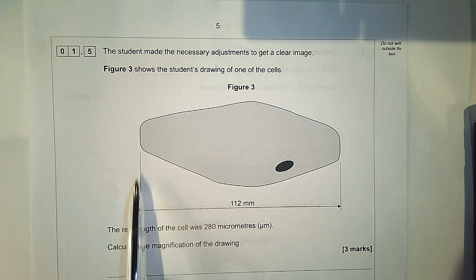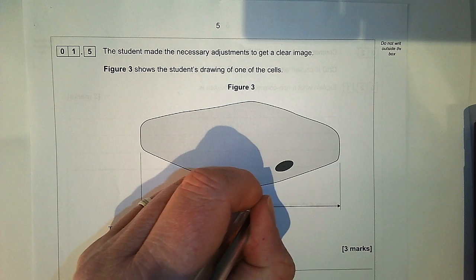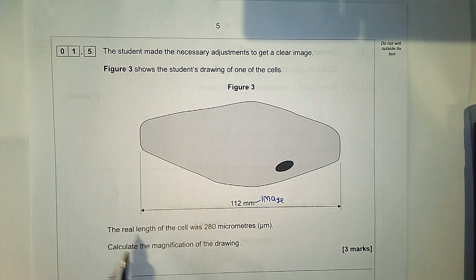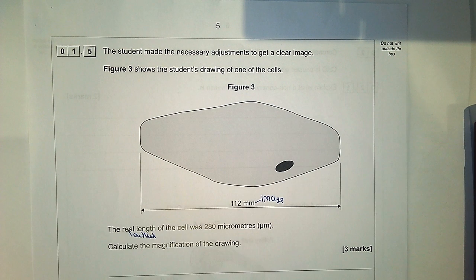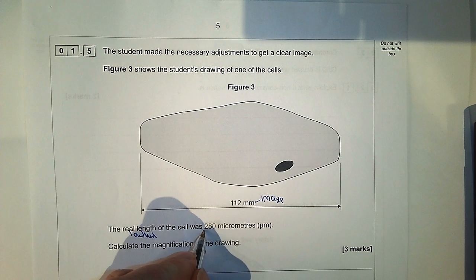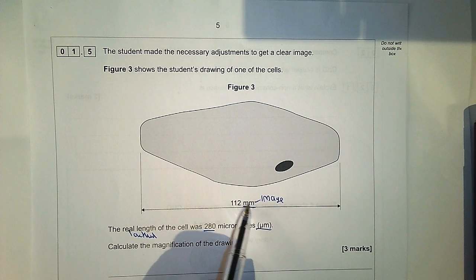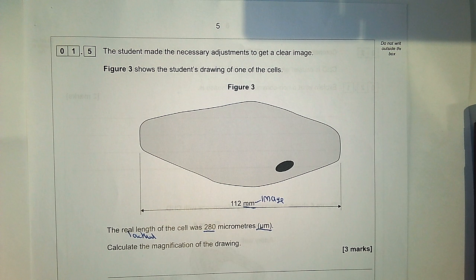We're told that the length of the image is 112 millimeters, so that's the length of this diagram. We're told that the real length, the actual length of the cell, was 280 micrometers. Always check what the units are, so we've got different units. The question says calculate the magnification of the drawing.